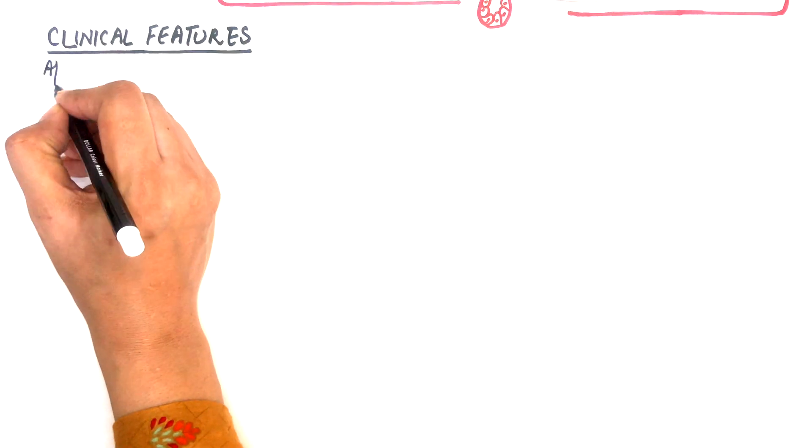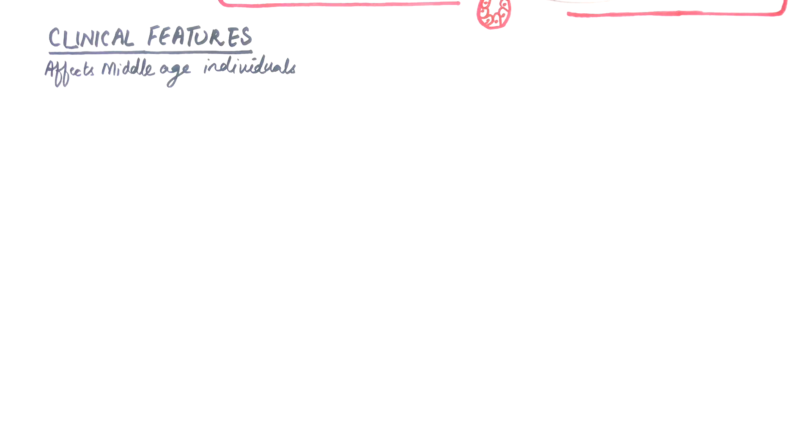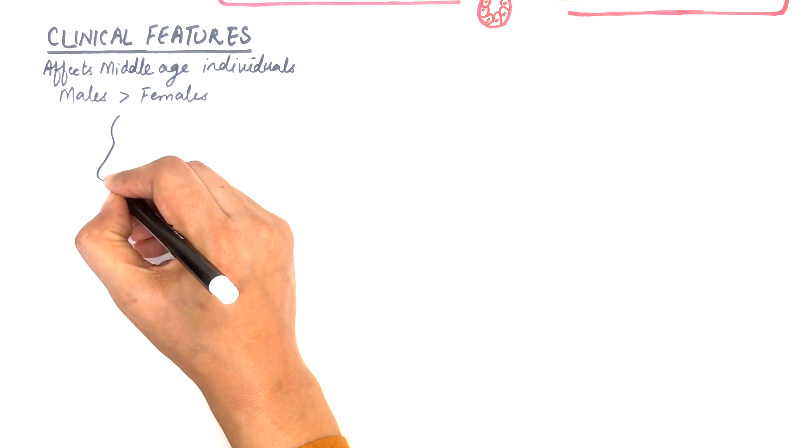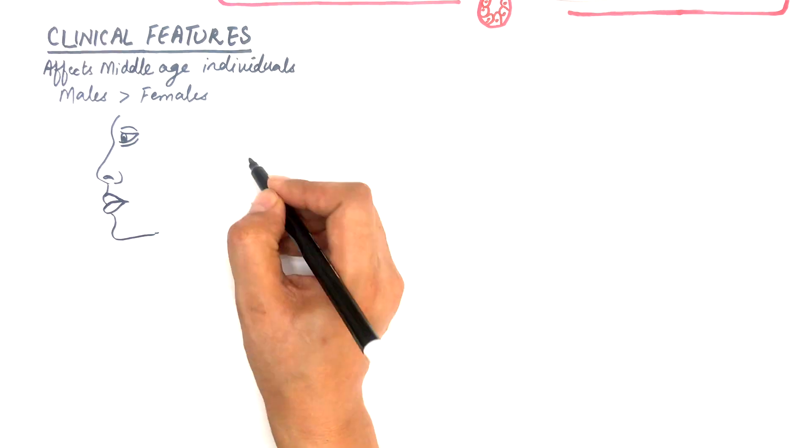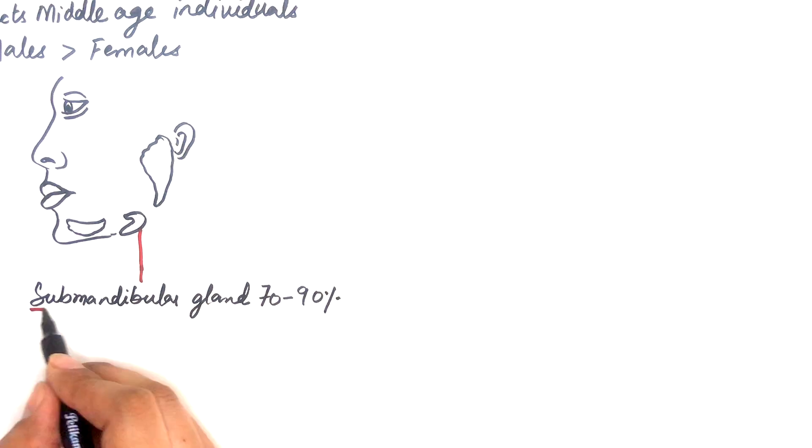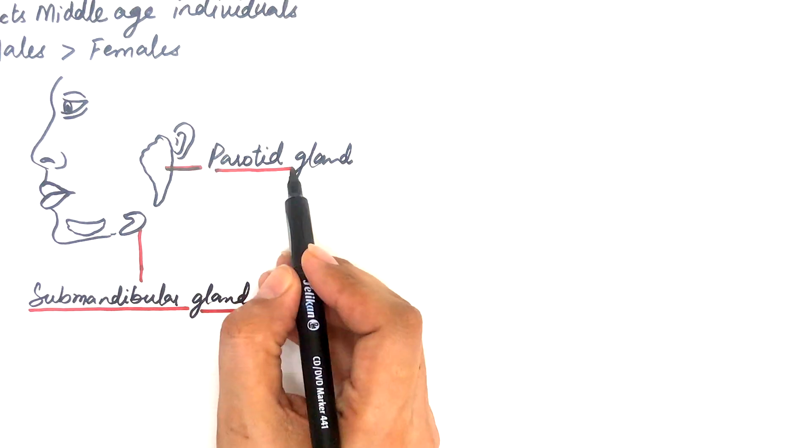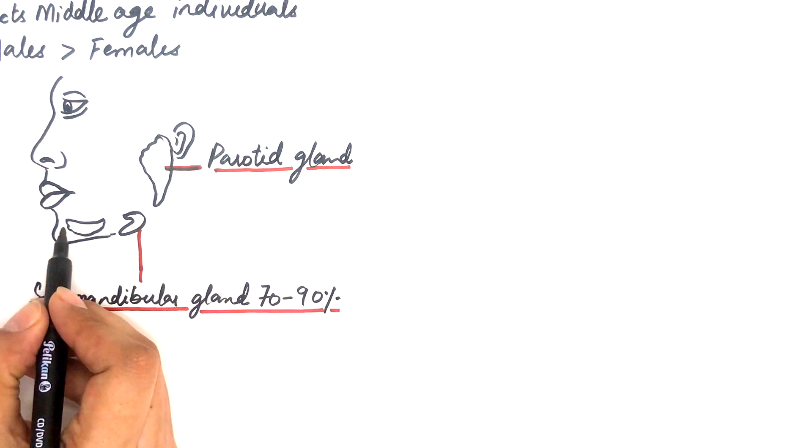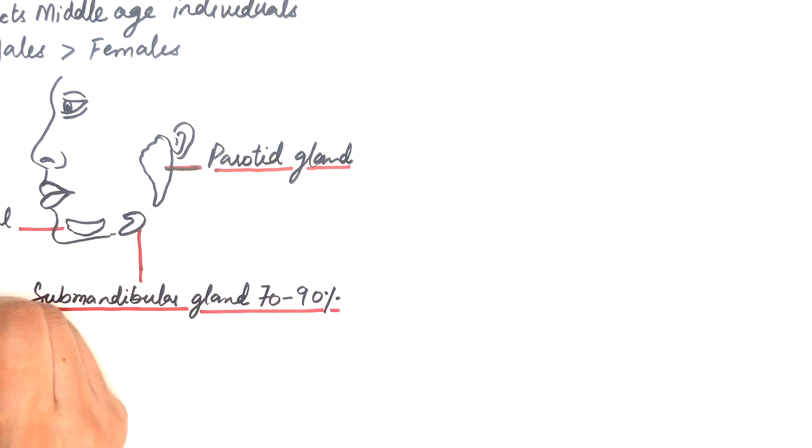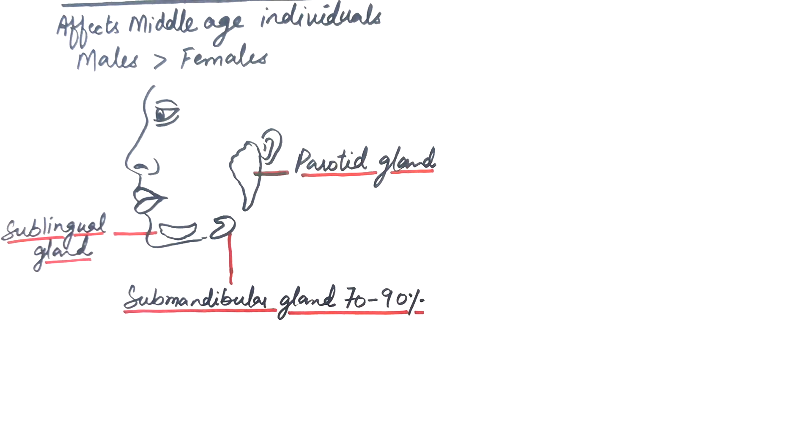Sialolithiasis affects mostly middle-aged individuals with a slight male predilection. In about 70 to 90% of cases, the stones most often form within the ductal system of the submandibular gland and less often within the parotid and sublingual glands. The stones could also form within the minor salivary glands, most often within the glands of the upper lip and buccal mucosa.